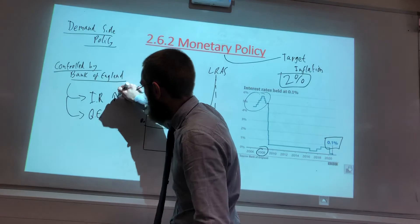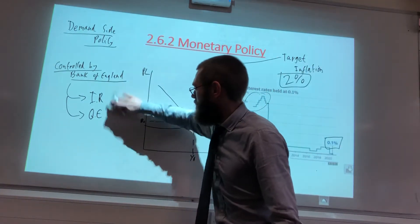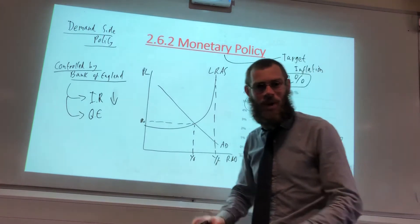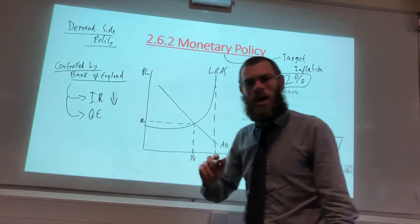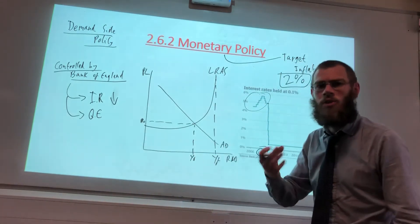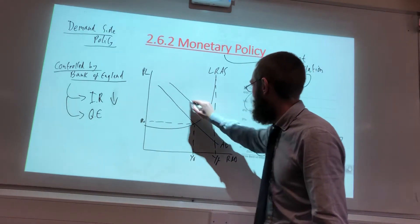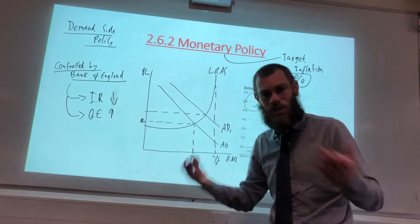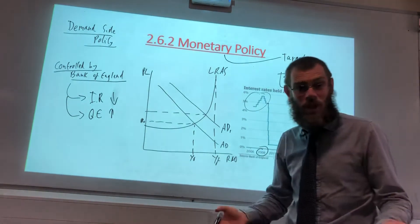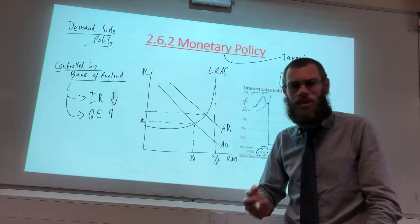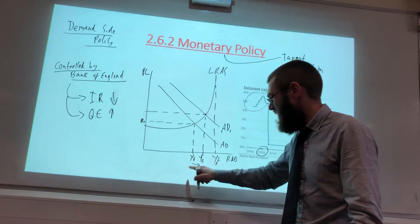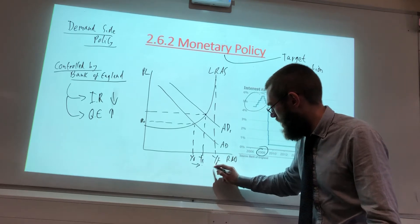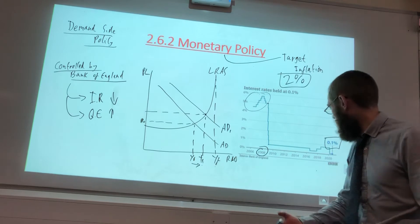So what could the Bank of England do? Interest rates would be put down — to encourage us to borrow more and spend more, and encourage businesses to do likewise — which would result in aggregate demand increasing to AD1. They could also increase quantitative easing, pushing money into the system, which should encourage banks to lend more and lower their rates further. Both of these shift output from Y zero to Y one, giving us economic growth, and unemployment — the negative output gap from YF to where we currently are — is also falling.